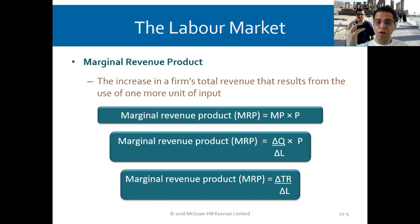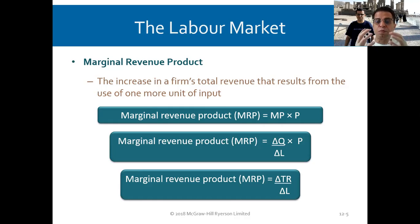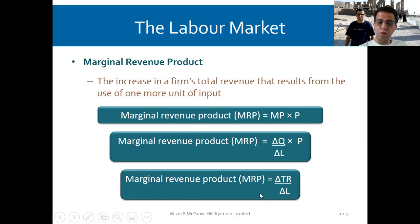So the MRP, or marginal revenue product, is the change in quantity — for example, from five you became producing seven because you added one more labor, the change in labor. The MRP is also expressed as the change in total revenue divided by the change in labor.